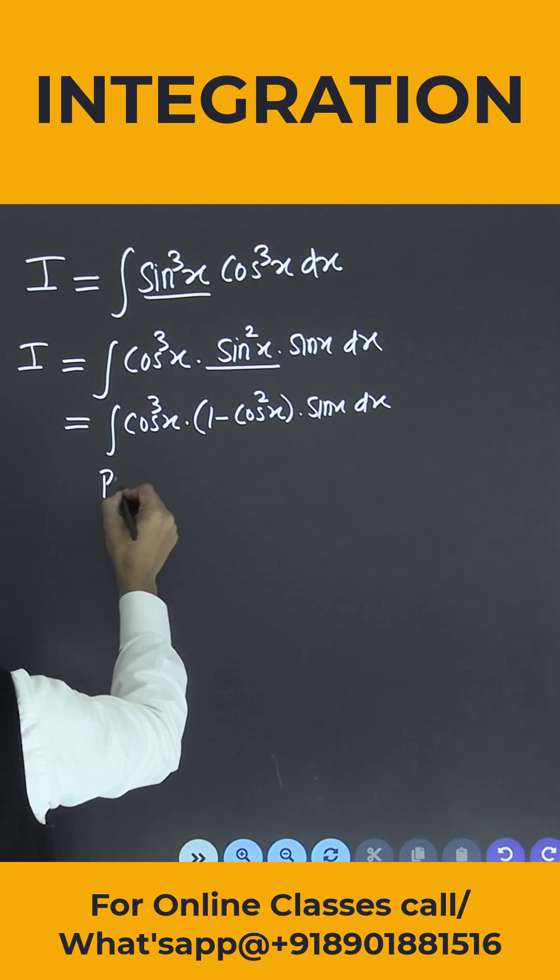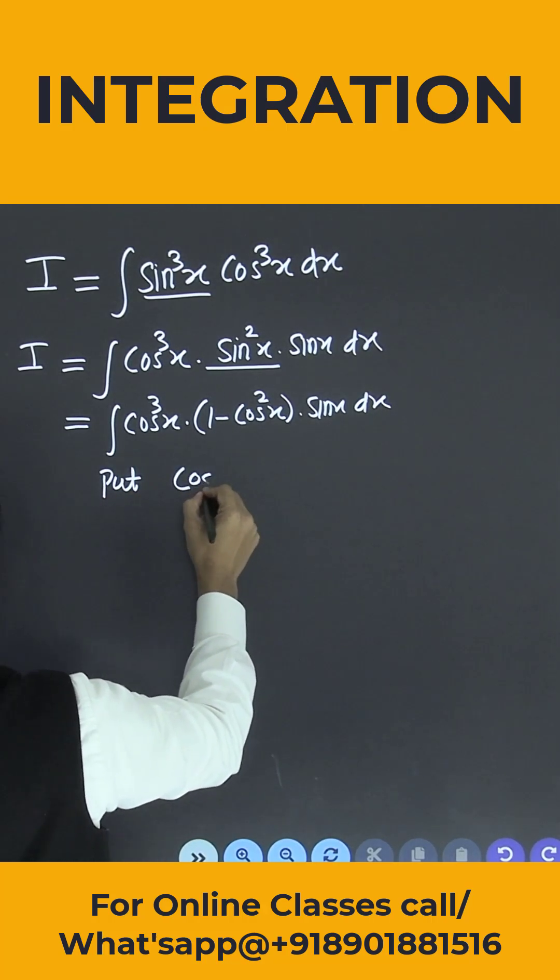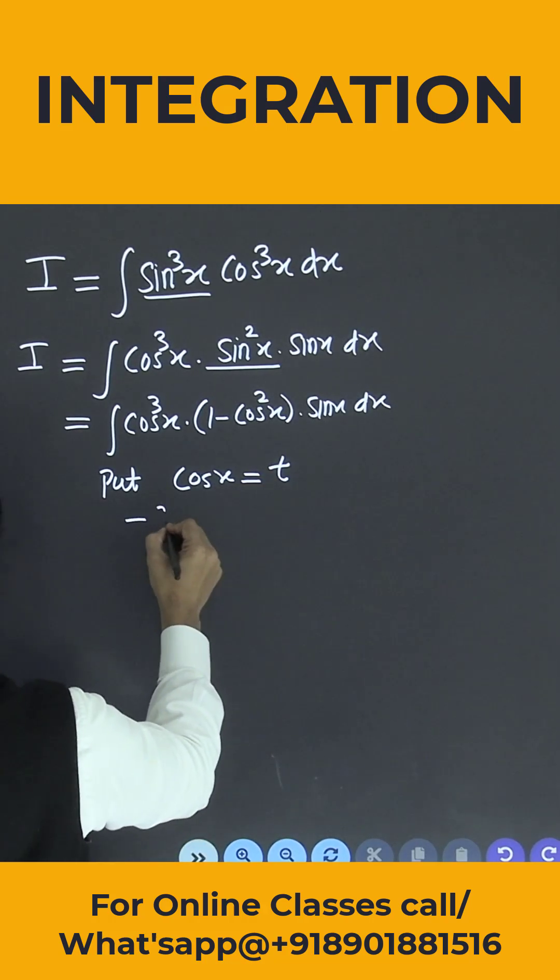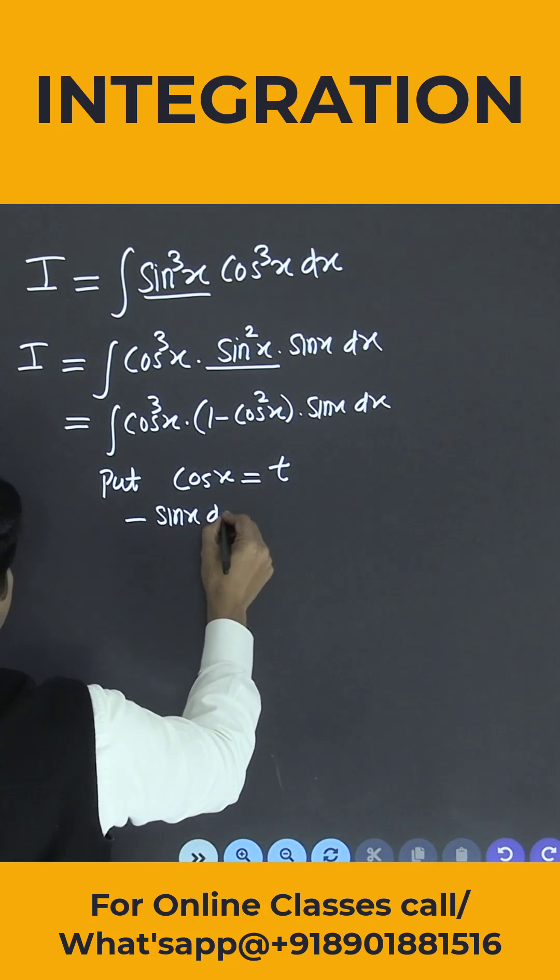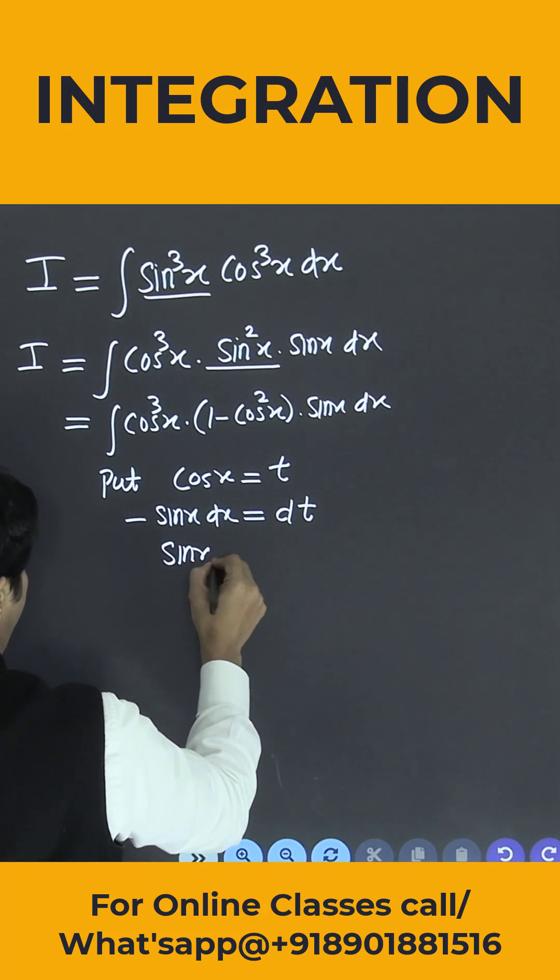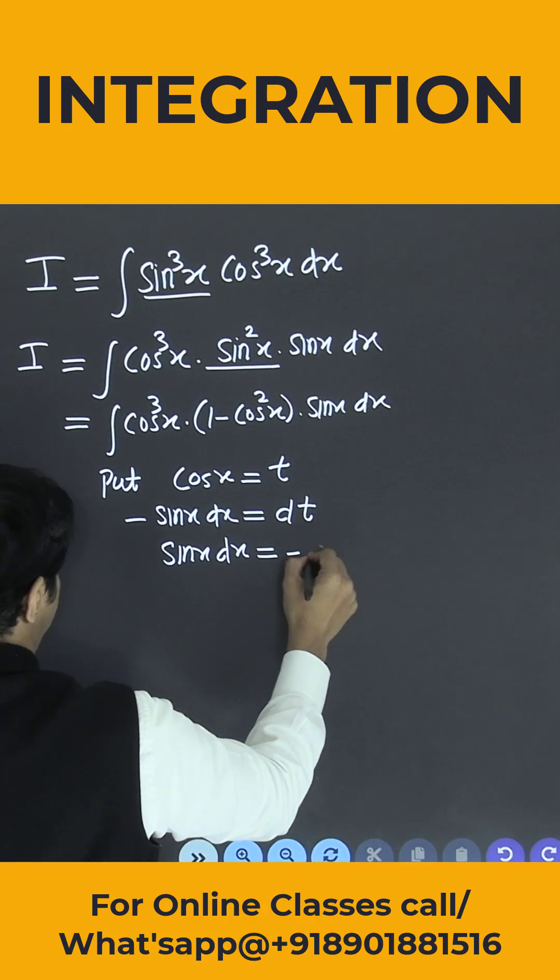Now simply put cos x is equal to small t. If I differentiate, I will be getting minus sin x into dx is equal to dt. So what is the value of sin x into dx? This is nothing but minus dt.